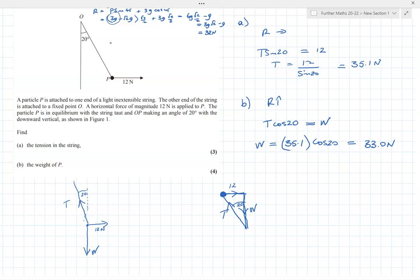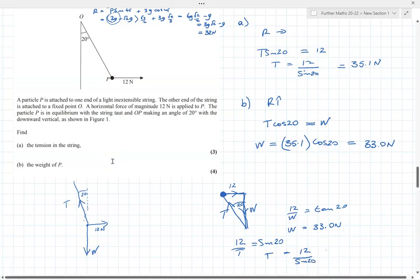From that we can get W and T pretty quickly from normal trigonometry. We can say that 12 over W equals tan 20, and that will get us W straight away, W is 33.0 newtons. You can also work out T by saying 12 over T equals sine 20, so T equals 12 over sine 20, which gets us 35.1. If this last bit confused you or you've never seen it before, just ignore it.